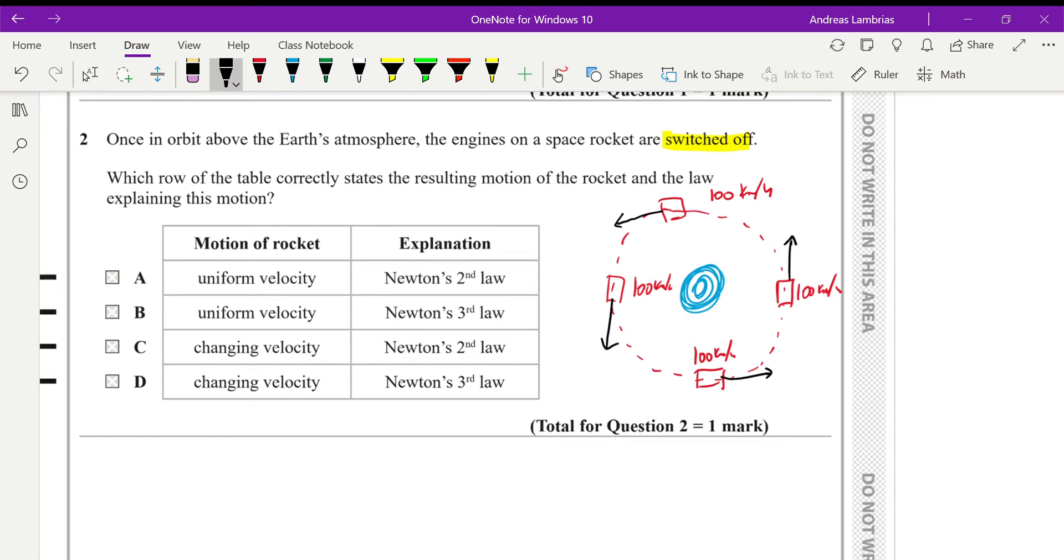So even though the magnitude is the same, the direction is different. Therefore, the velocity, since the direction is changing, the velocity is changing as well. So our answer should be one of these two describing changing velocity. Now which one describes the motion? Definitely not Newton's third law, because Newton's third law is about action and reaction. Newton's second law is telling us about a force that will cause acceleration. Changing velocity means acceleration. So that will be C.